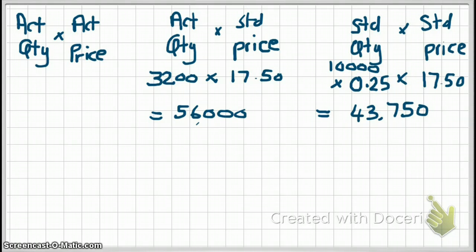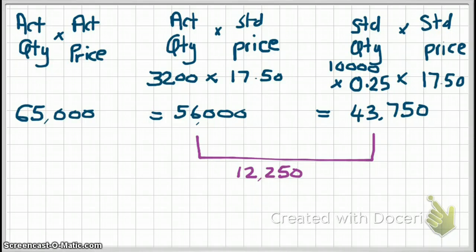Finally, for our actual number, we don't need to calculate anything because we're told they spent $65,000 on direct labor costs. Now we have our three columns and can calculate variances. The direct labor efficiency variance is $12,250 — the difference between $56,000 and $43,750. Since cost was expected to be $43,750 but ended up being $56,000, this is an unfavorable variance.